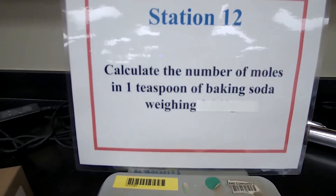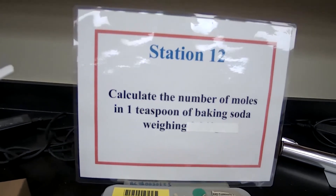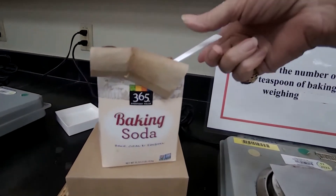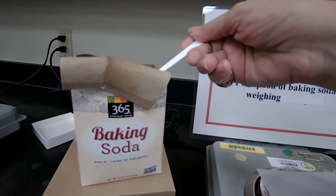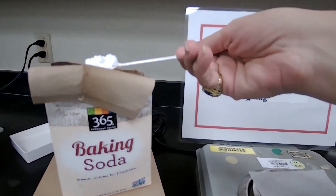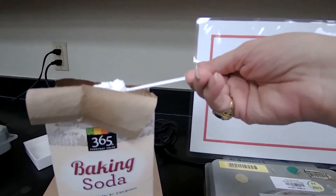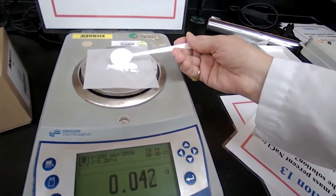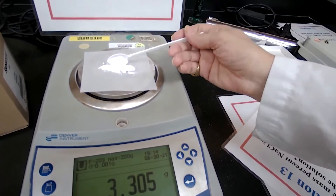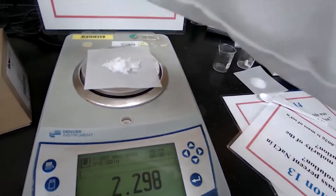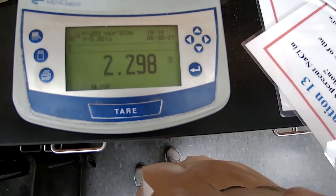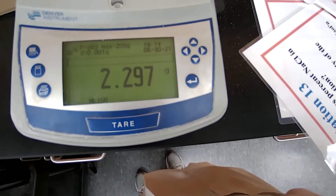For the next station, you have a teaspoon of baking soda and you measure its mass. The formula for baking soda — sodium bicarbonate, NaHCO3 — is given in the lab manual. Record the mass, convert to moles, and answer the question.